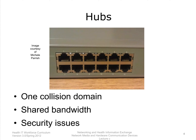Another problem with hubs is that bandwidth is equally shared among all active ports. If the bandwidth coming into the hub is 10 megabits per second and there are five active ports, then each port has access to 2 megabits per second. The ports are all part of one collision domain, which means all devices connected to those ports must compete with each other to have access to the network.